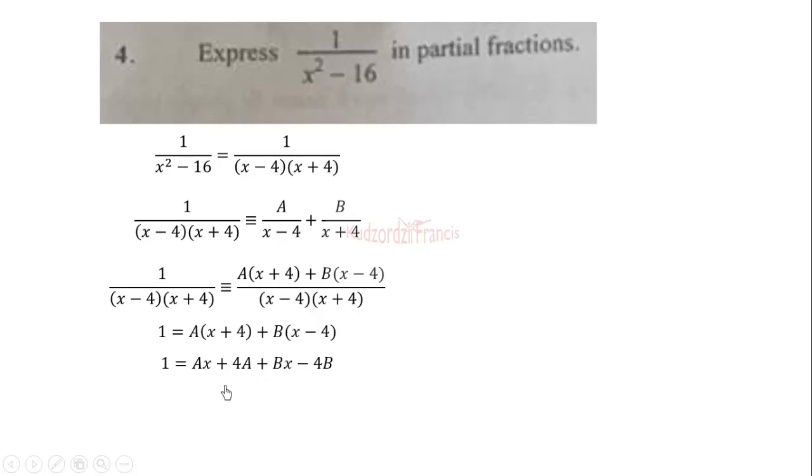We can regroup the terms and compare coefficients. So regroup the x terms and the constant terms. For the constants, compare coefficients of constant on both sides. We have 4A minus 4B equals 1. This will give us our first equation.